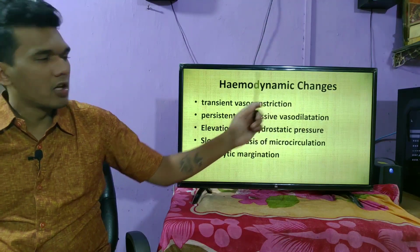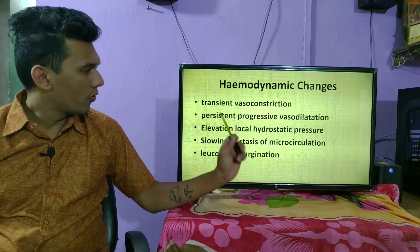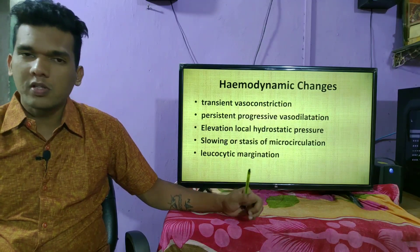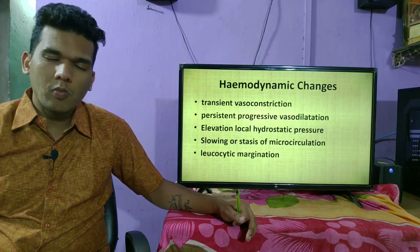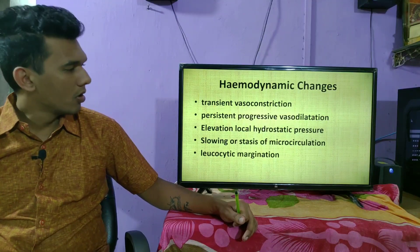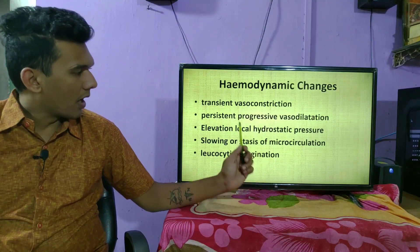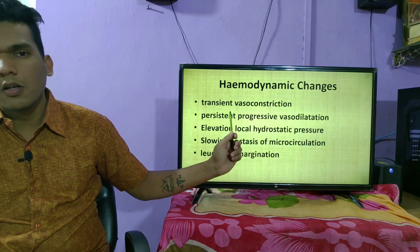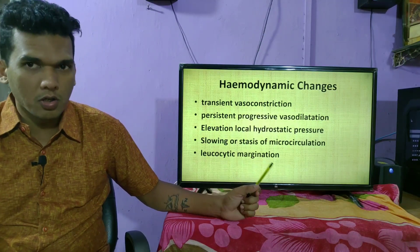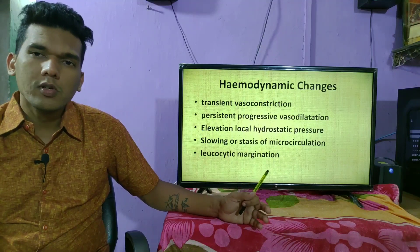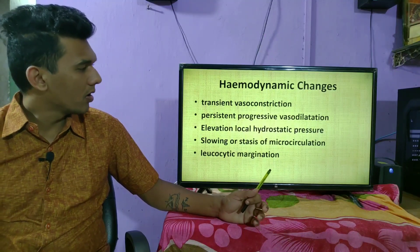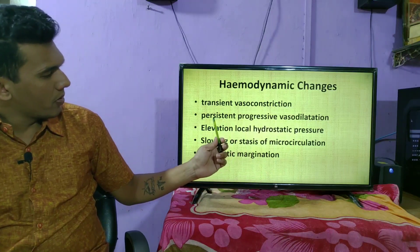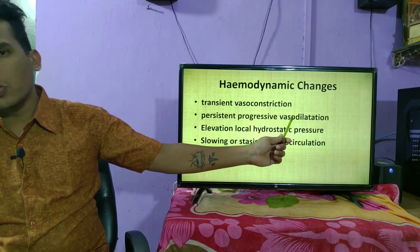The first hemodynamic change is transient vasoconstriction. After any injury, the very first response is vasoconstriction. The word 'transient' itself suggests it is for a very short duration — just a few seconds.